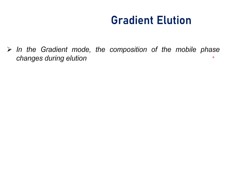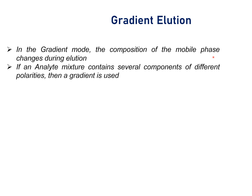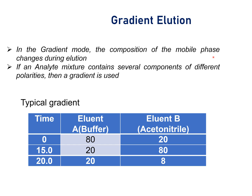Gradient elution: in gradient mode, the composition of the mobile phase changes during elution. If an analyte mixture contains several components of different polarities, then gradient mode is used. A typical gradient example: at time T=0, eluant A (buffer) is 80% and eluant B (acetonitrile) is 20%. At 15 minutes, eluant A is reduced to 20% while eluant B is increased to 80%. At 20 minutes, eluant A remains at 20% and eluant B at 80%.